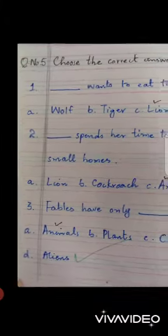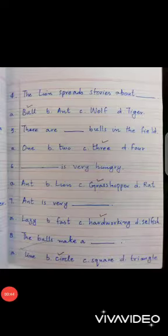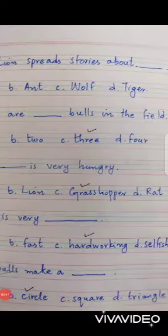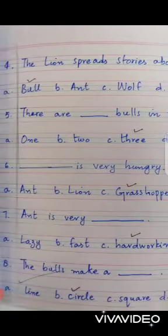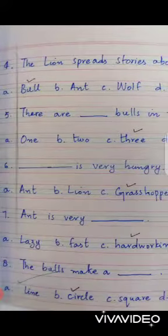Number four: the lion spreads stories about blank. Options: bull, ant, wolf, tiger. Correct option is bull.